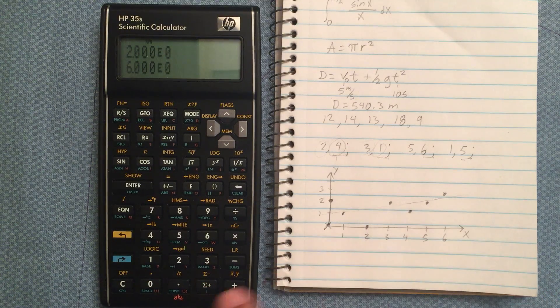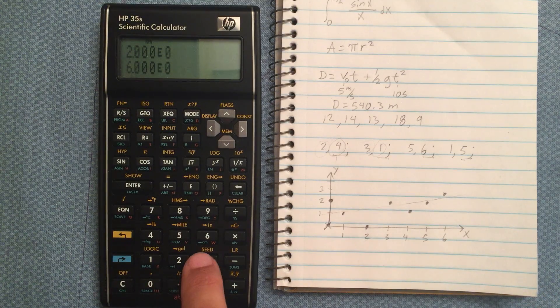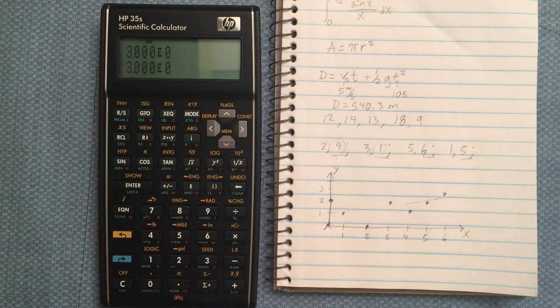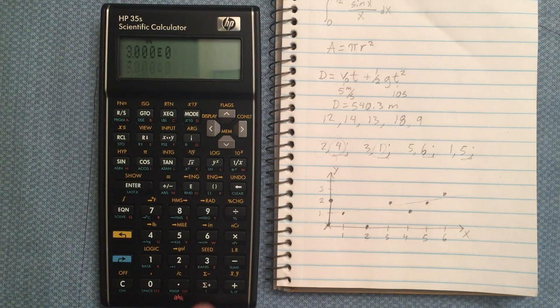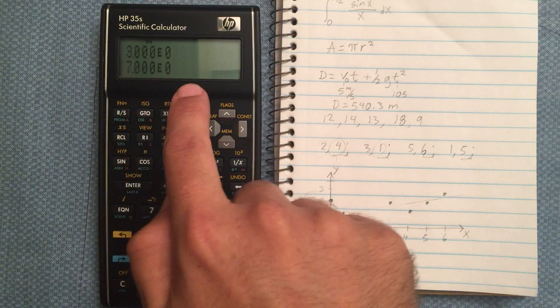And y value of 3, x of 6. And we do have 7 items in there.